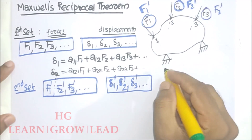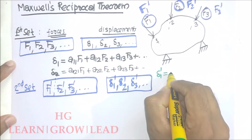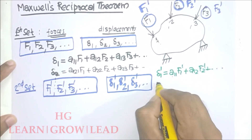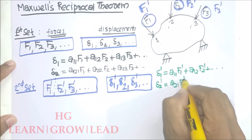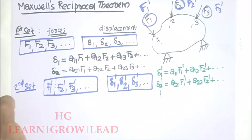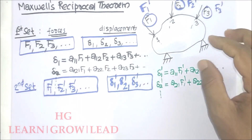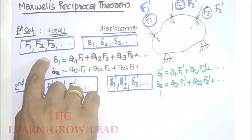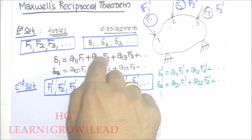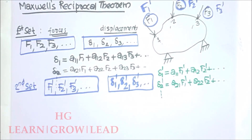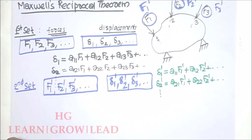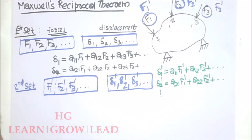The displacements for the second set of forces in terms of influence coefficients can be written as: D1' = A11·F1' + A12·F2' + etc., and D2' = A21·F1' + A22·F2' + etc.